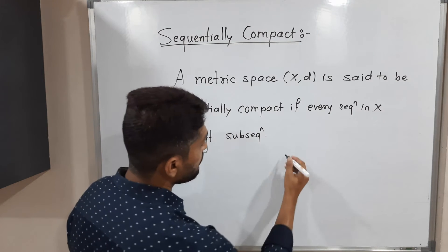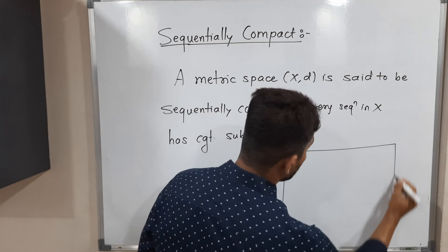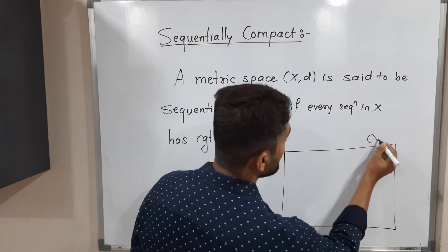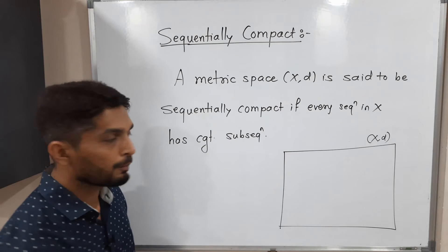It means, suppose this is a metric space (X,d) we have. So when can we say this metric space (X,d) is sequentially compact?